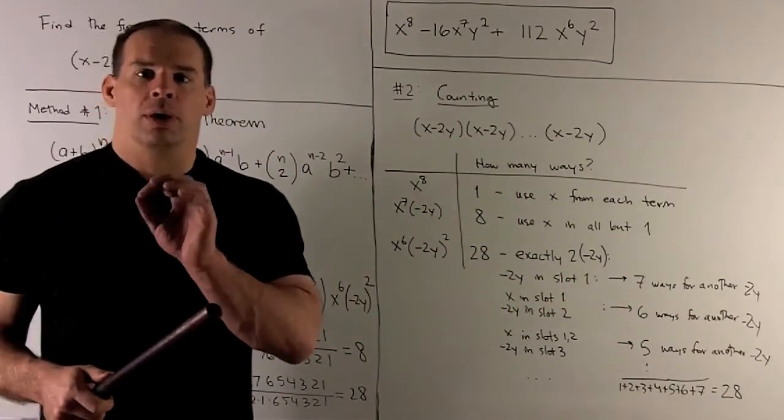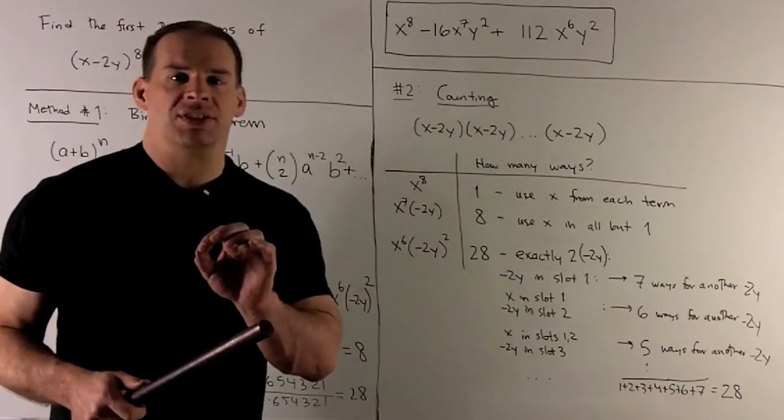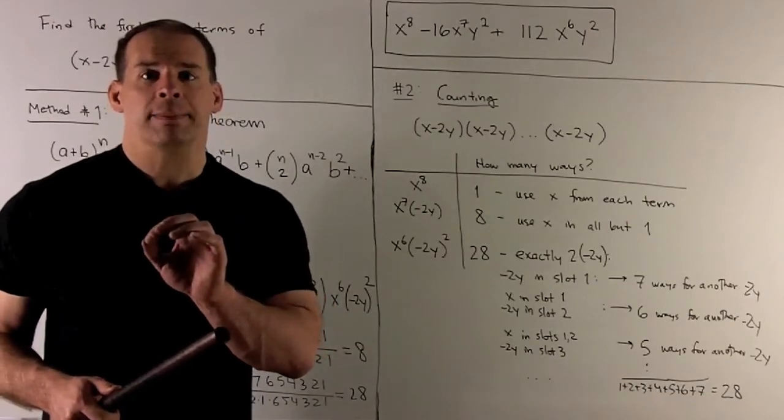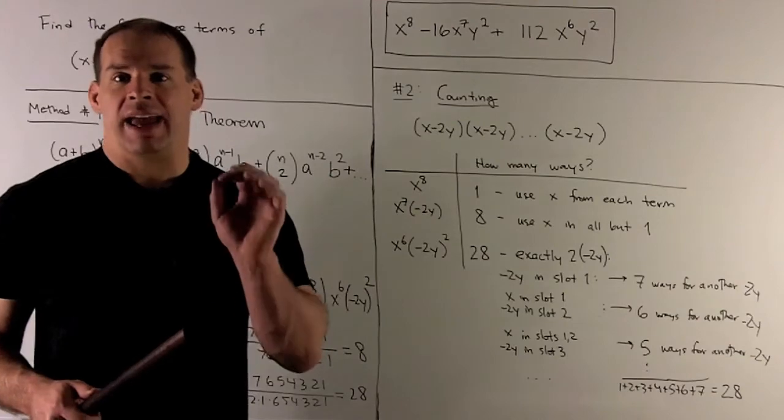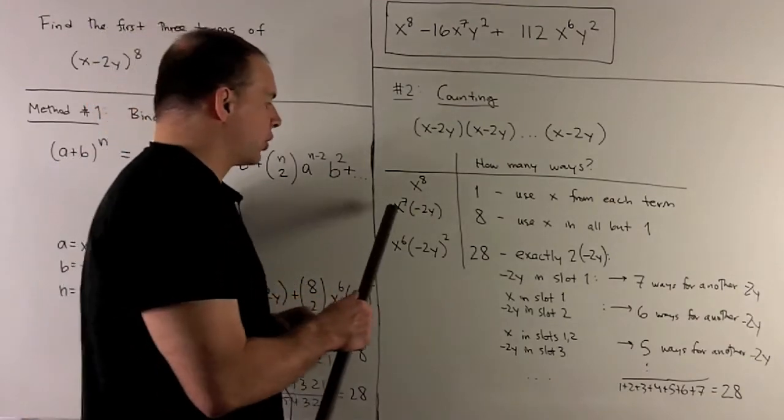So, the idea is going to be you're going to go through parentheses by parentheses, choose your -2y. That's going to fix the rest as x. So, we're only going to have 8 ways to get this term here.